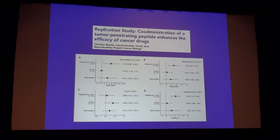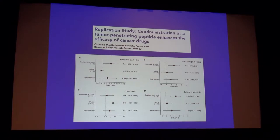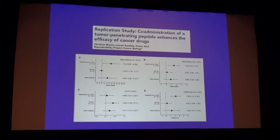Here's another example where the confidence intervals clearly do not overlap — the estimate of effect in the reproducibility attempt is exactly zero with very tight confidence intervals. One would argue nobody would question that the result could not be reproduced. Well, even for that result, the original authors said their results were perfectly fine and it was just an error of the reproducibility effort — even though the reproducibility effort had been agreed upon by everyone beforehand, including the original authors.